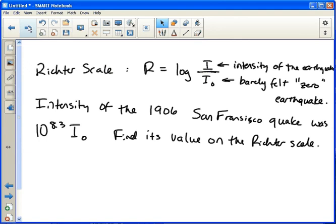So to give you an idea, 10 raised to the 8.3 is north of 100 million. So the one in San Francisco in 1906 was over 100 million times more powerful than the zero earthquake. So we're going to find its value on the Richter scale.